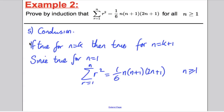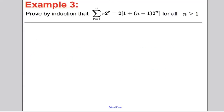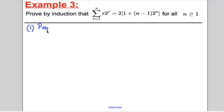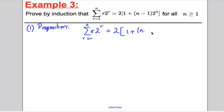I'm going to go through one more example of a slightly different type, and then you're going to do some yourself afterwards. We're trying to prove by induction that the sum from r = 1 to n of r·2^r equals 2(1 + (n−1)·2^n) for all n ≥ 1. Step 2, basis case: take n = 1 and work out the left-hand side.